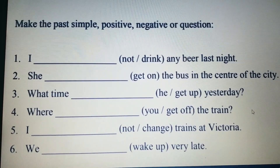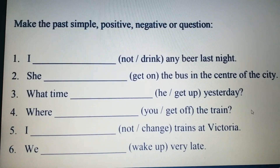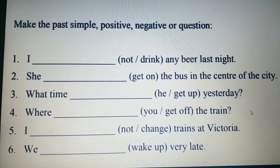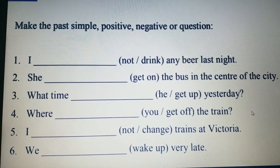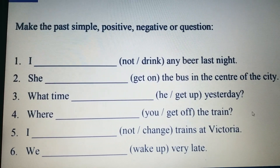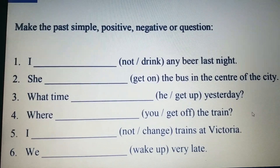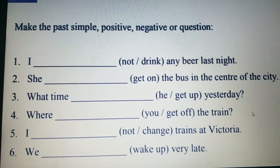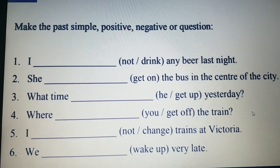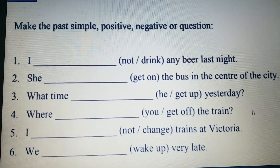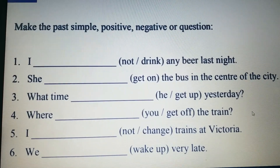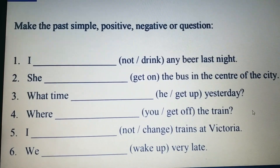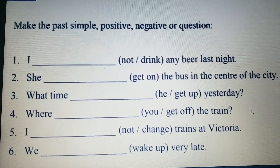So: 'I did not drink any beer last night.' The next sentence is: 'She ___ the bus in the center of the city.' Our verb here is 'get,' and for simple past tense we always use the second form of the verb. The second form of 'get' is 'got,' so: 'She got on the bus in the center of the city.'